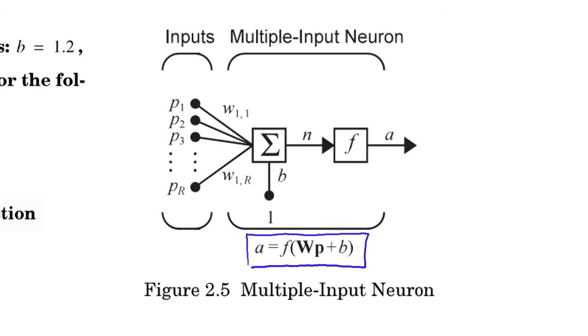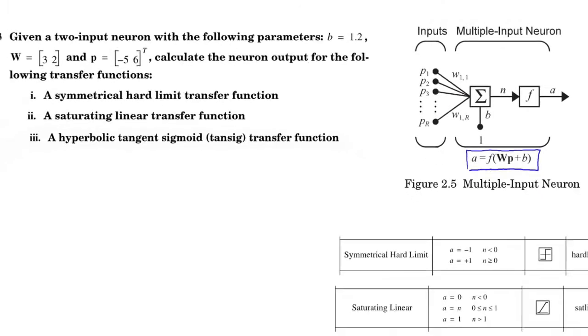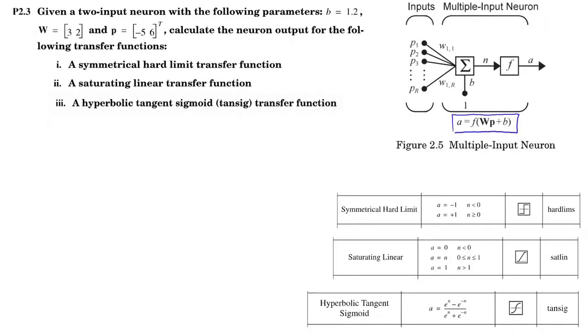But this time, WP is a multiplication between two vectors, not scalars. So first, I'm going to calculate input to the transfer function, or N. So we know N equals WP plus B. W is 3, 2.